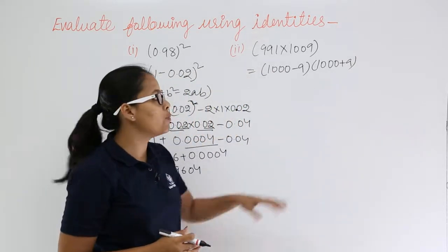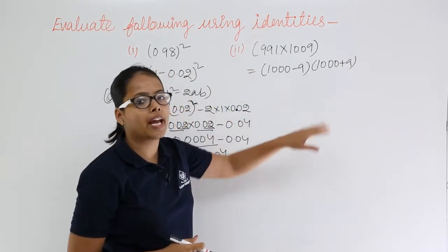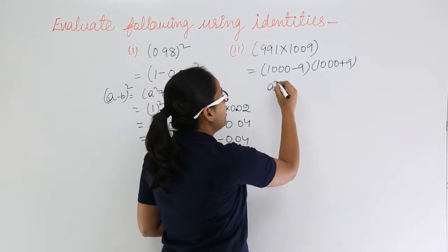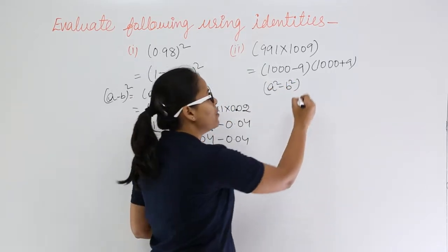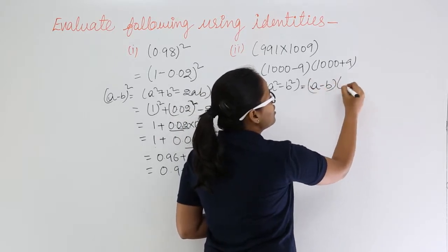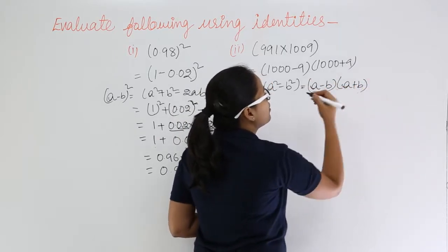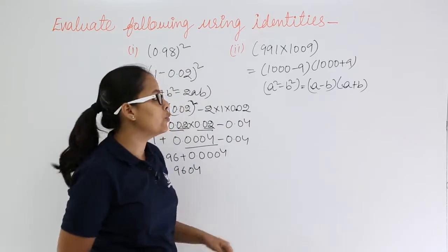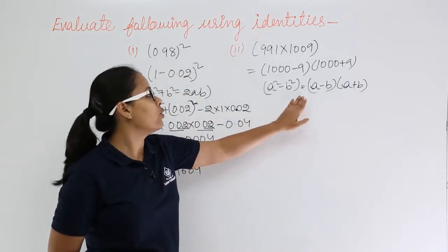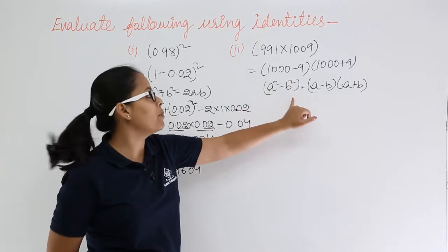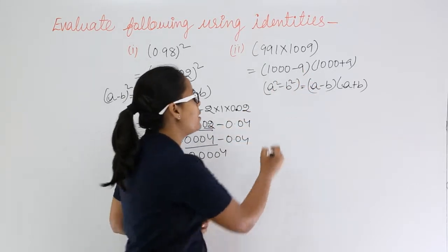Now let's observe which identity you can apply here. You can apply a square minus b square identity which will give you a minus b plus b. So what you are going to do? From this you are going to write this. So here a will be 1000 and b will be 9, so replace the value here.